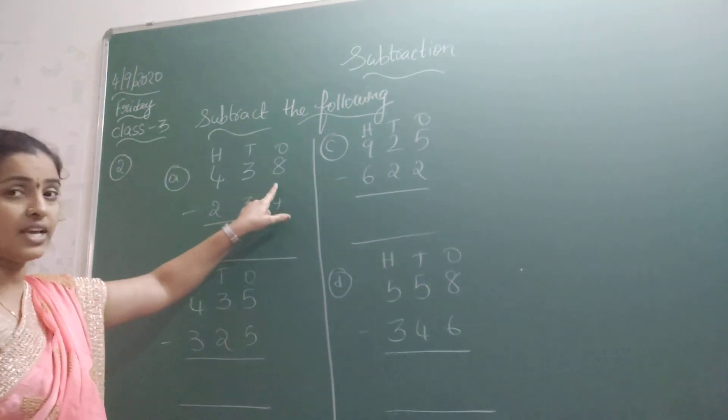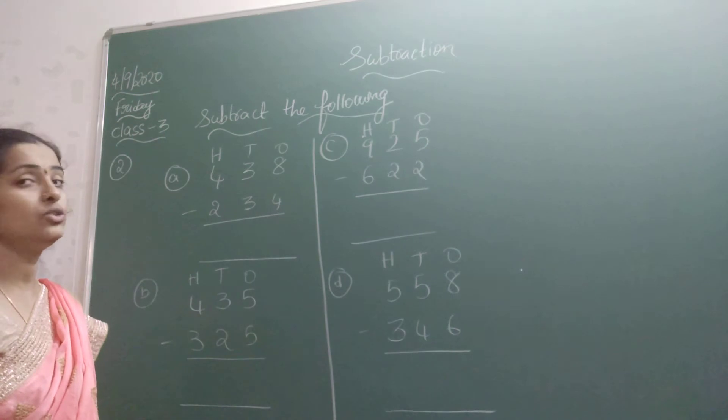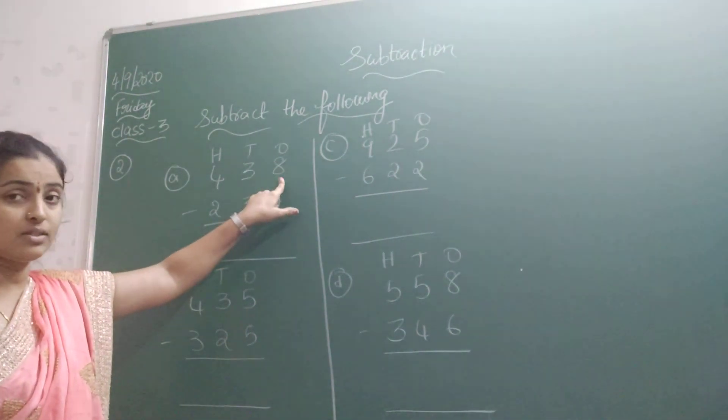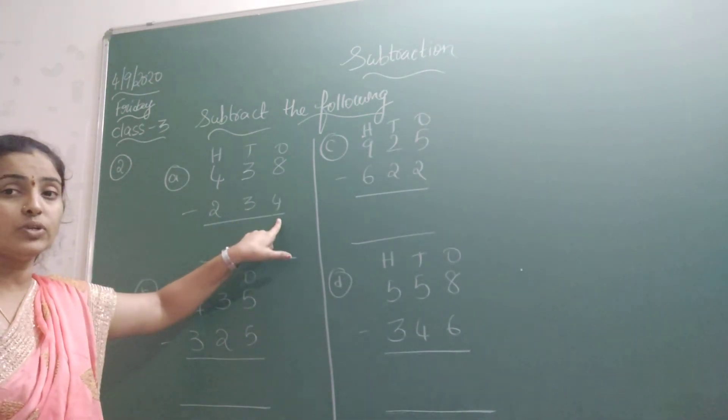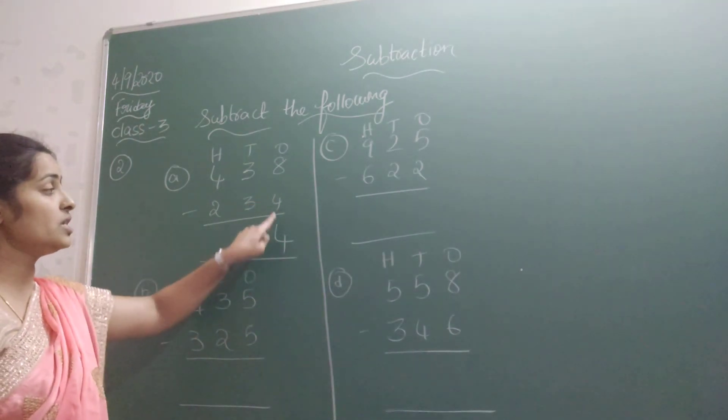The number is 438 minus 234. So how do I need to subtract here? I need to remove from one's place. What number is there? In one's place, 8 minus 4. So 8 minus 4 is how much? That is 4. 8 minus 4 is 4.